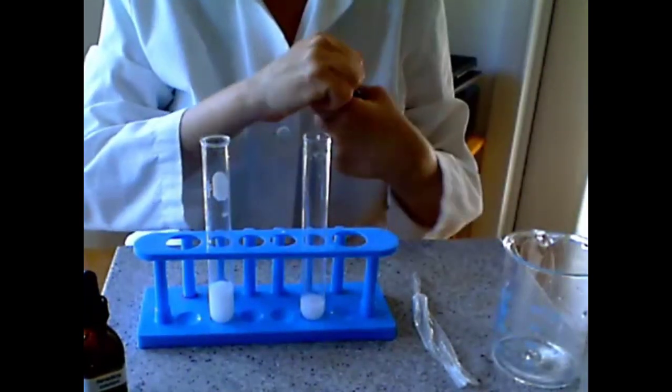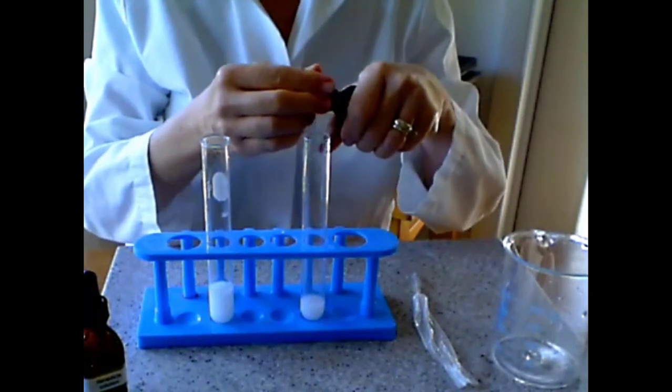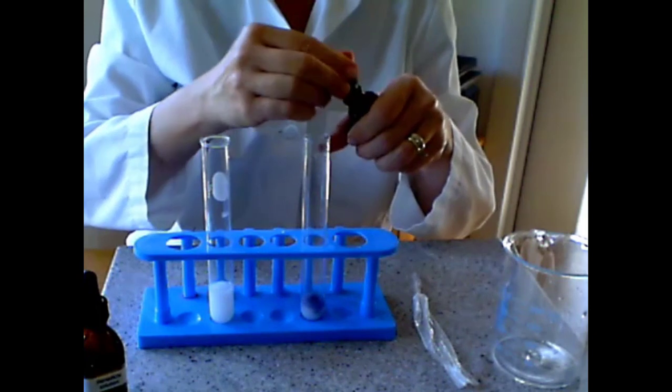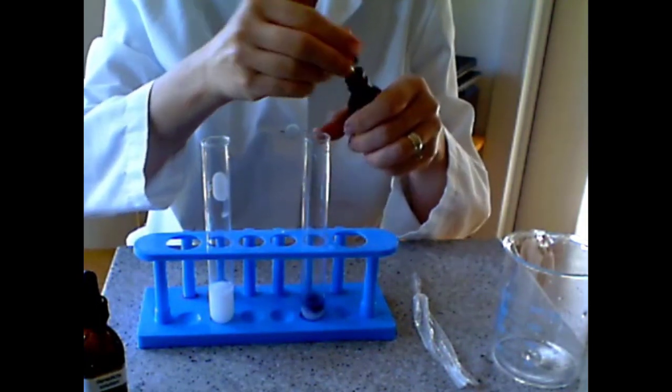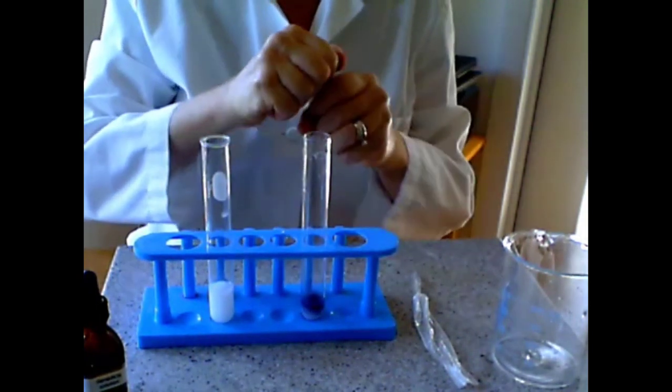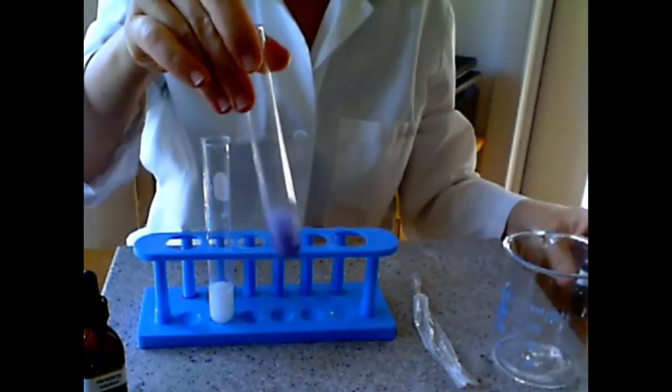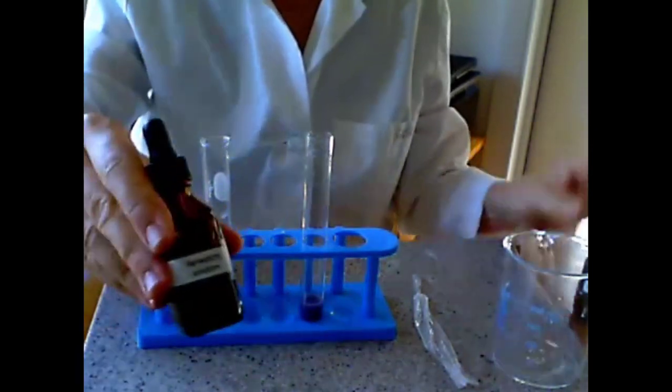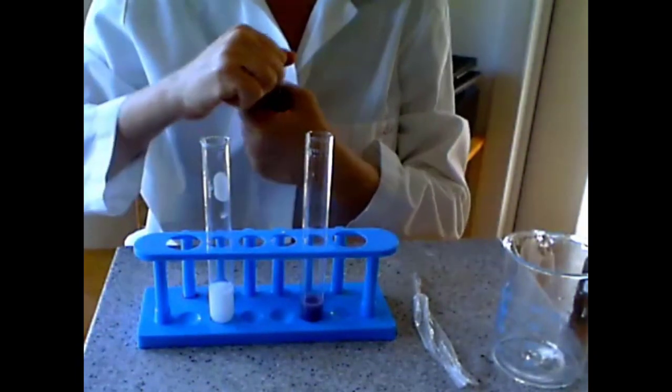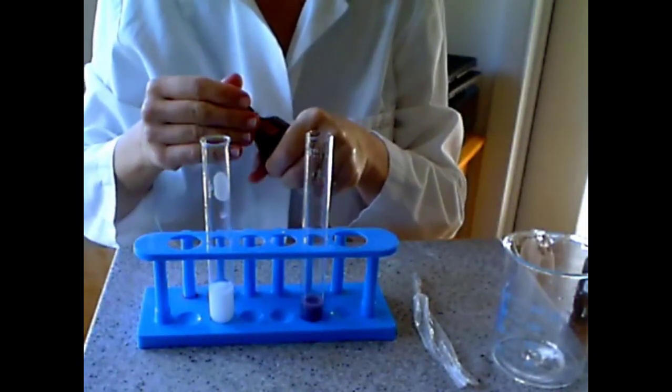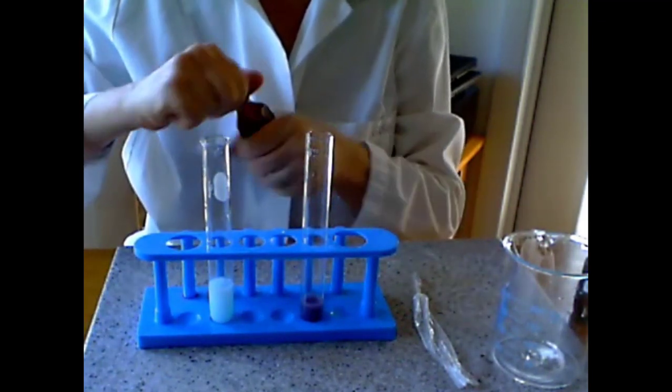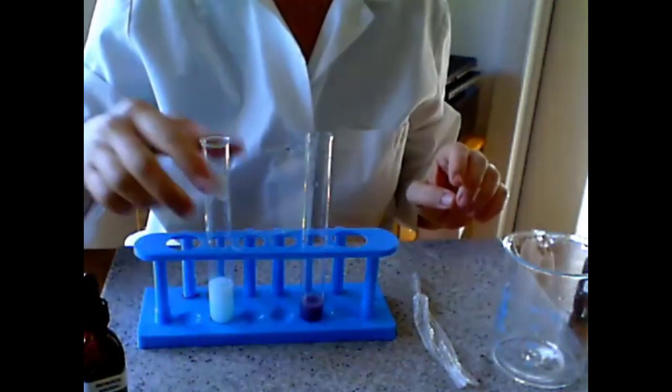We will add IKI, or iodine, in the first tube. Notice the color inside of the tube now. And now we are going to add Benedict's to the second tube. And we are going to take this tube to heat for three minutes.